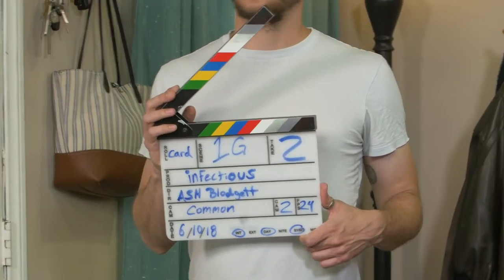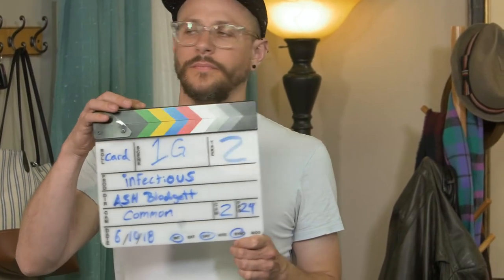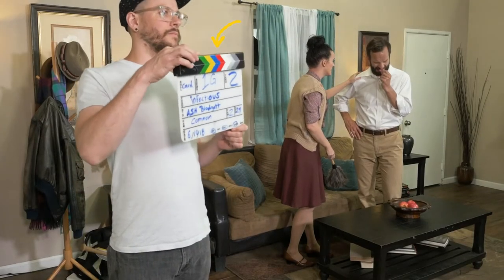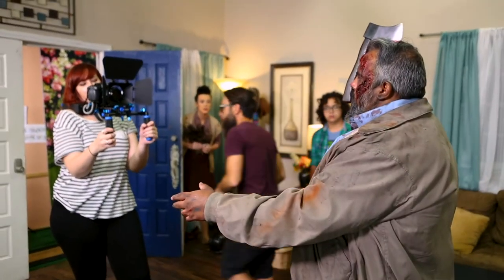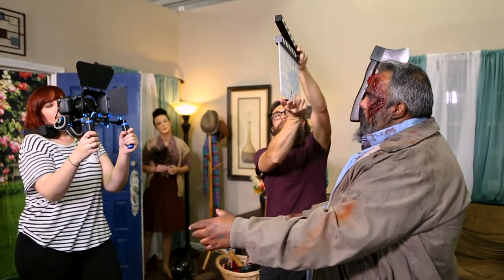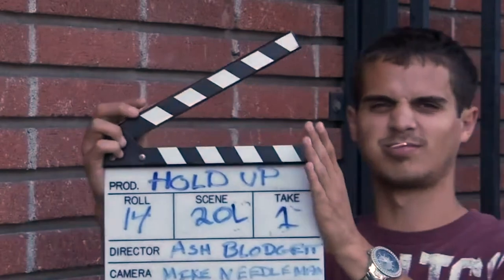Now that you know how to read the info on a slate, let's dive into some slating tips. First, you want to make sure you fill up the frame with the slate so the editor can clearly read all of the information. Next, make sure the clap is also visible in frame, because if it's not, it's going to be useless to your editor in post. If you clap the slate and it either wasn't in frame or just not useful, you'll want to use second sticks — that's where you clap the slate again to ensure a good, clean clap in the audio.